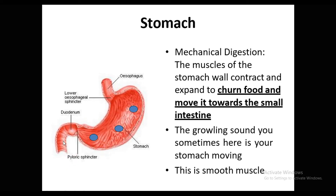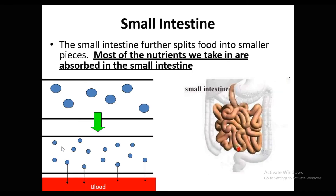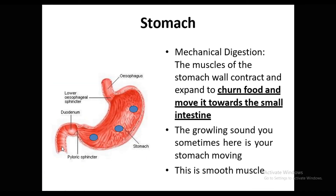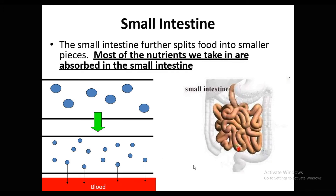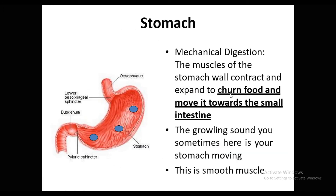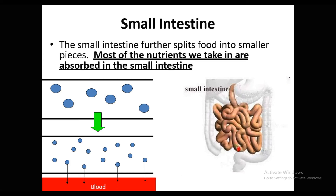The food comes from here and goes to the small intestine. If you look at this, this is the line of the small intestine. Your stomach is moving — this is a smooth muscle. What type of muscle is here? This is a smooth muscle.